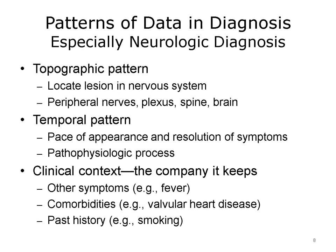Especially in neurologic diagnoses, clinicians may use the topographic pattern, the temporal pattern, and the clinical context. The topographic pattern refers to mapping symptoms to the specific location in the brain or nervous system responsible for that function — the patient's neurologic symptoms and signs on physical examination are correlated with the exact nervous system location that might be responsible. This also applies to diseases of the nervous system outside the brain, such as the spinal cord. In analyzing the temporal pattern, a clinician examines the pace at which symptoms appear or resolve to understand the underlying pathophysiological process.